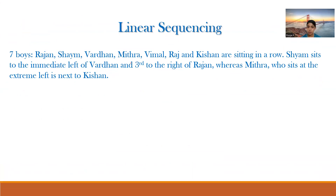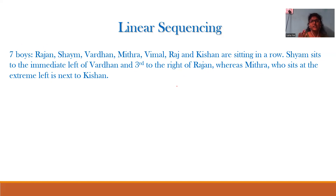Moving to the next example in linear sequencing. We have seven boys — Rajan, Sham, Vardhan, Mitra, Vimal, Raj, and Kishan — sitting in a row. Sham sits to the immediate left of Vardhan and third to the right of Rajan, whereas Mitra, who sits at the extreme left, is next to Kishan. Note: they didn't mention 'facing us,' so our right is right and our left is left as stated.